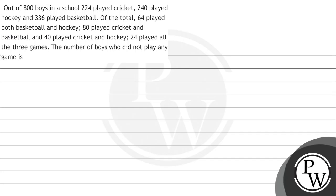Let's read the question first. Out of 800 boys in the school, 224 played cricket, 240 played hockey, and 336 played basketball. Of the total, 64 played both basketball and hockey, 80 played cricket and basketball, 40 played cricket and hockey, and 24 played all three games. The number of boys who did not play any game is to be found.